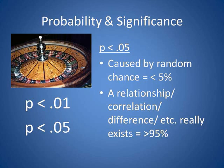Probability and Significance: For interpreting P less than .01 and P less than .05, go back to the handout. You want to know if what you are seeing is due to random chance, or whether there really is a relationship, a difference, or a correlation. The researcher decides prior to collecting the data whether the .01 or .05 level will be used. The handout discusses this in greater detail.